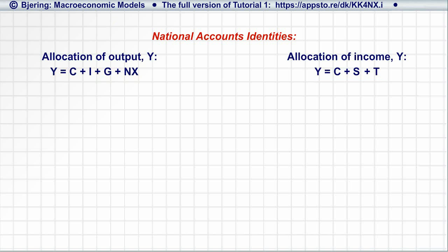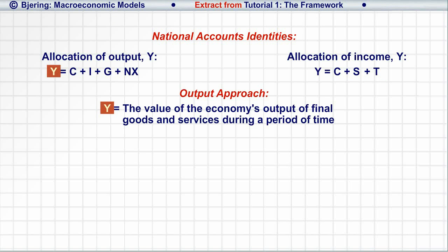In practice, most national accounts take an output approach and compute Y as the value of an economy's output of final goods and services during a period of time.